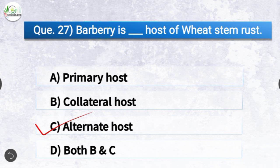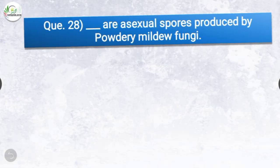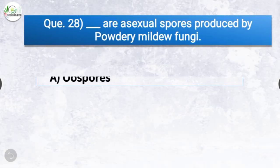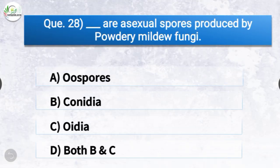Question number twenty-eight: Dash are asexual spores produced by powdery mildew fungi. The options are oospores, conidia, oidia, or both B and C. The correct answer is option C, oidia. Oidia are asexual spores produced by powdery mildew fungi.